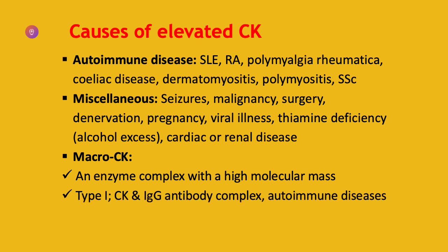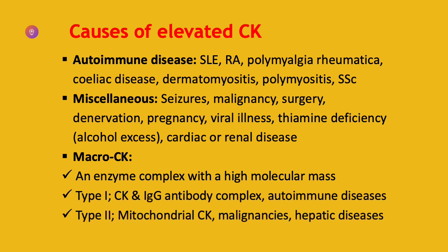Of particular importance is macro CK, which is an enzyme complex with a higher molecular mass than that usually found in the serum. It is of two types: macro CK type 1, in which CK is bound to an IgG antibody complex, mostly associated with autoimmune diseases; and macro CK type 2, which is mitochondrial CK bound to an undetermined protein, mostly found in malignancies and hepatic diseases. With quantitative serum assays, macro CK is indistinguishable from normal CK and falsely elevates the true CK level. CK electrophoresis is used to distinguish macro CK from the CK usually found in the serum.